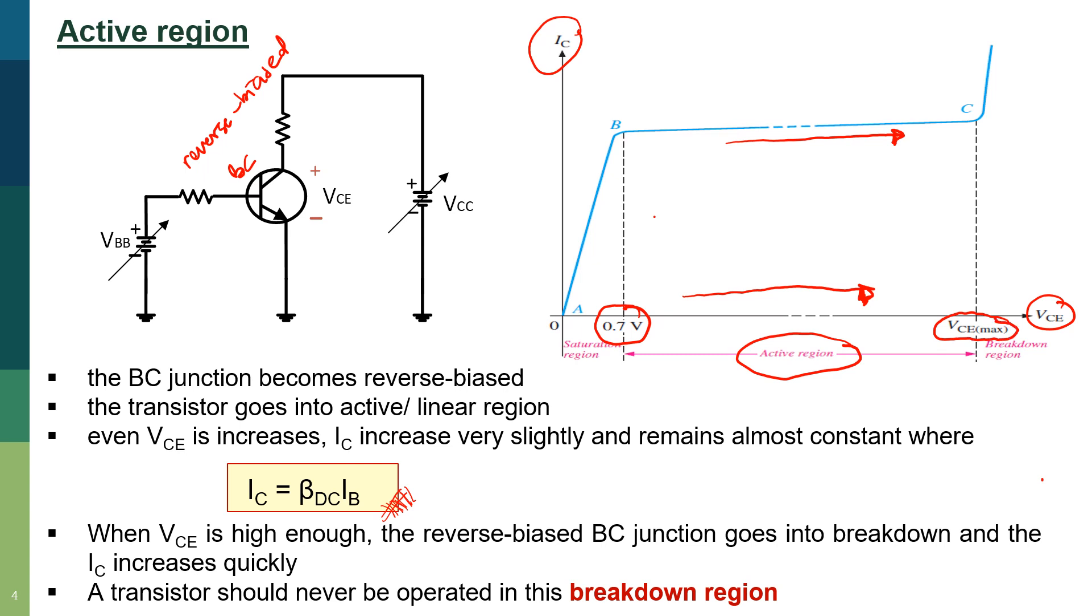When VCE is high enough, the reverse-biased BC junction goes into breakdown and IC increases very quickly. A transistor should never be operated in this breakdown region because it will cause an undesired collector current to flow.